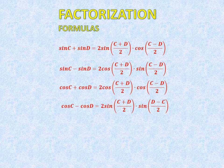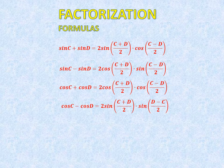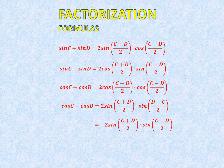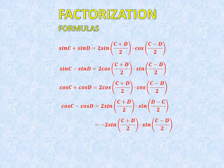Cos C minus cos D is equal to 2 sin((C plus D) upon 2) into sin((D minus C) upon 2). Or equivalently, minus 2 sin((C plus D) upon 2) into sin((C minus D) upon 2).